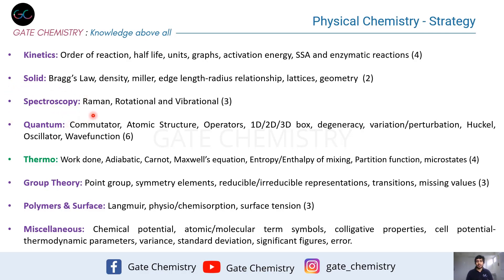For spectroscopy, about three questions on average come from Raman spectroscopy, rotational spectroscopy, and vibrational spectroscopy. Occasionally a question appears from EPR or NMR, but the majority in the last eight exams have been from Raman rotational or vibrational. Most questions are numericals, though you can also expect conceptual questions like which molecule is Raman active, rotationally active, or is a symmetric top molecule.